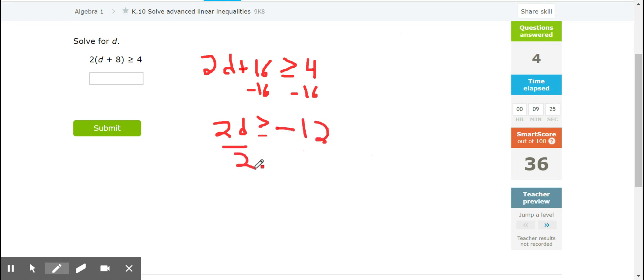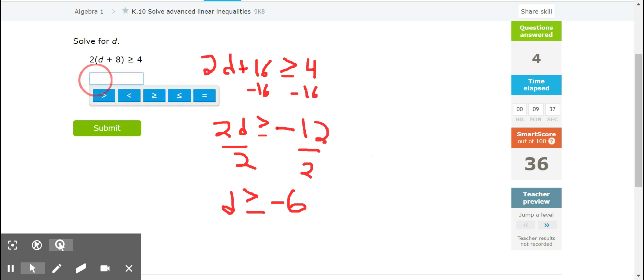Okay, we're dividing both sides now to solve for D. We're dividing by a positive 2, so dividing by a positive. We won't have to change the sign. So, D is going to be greater than or equal to negative 6.